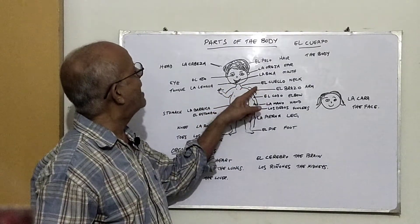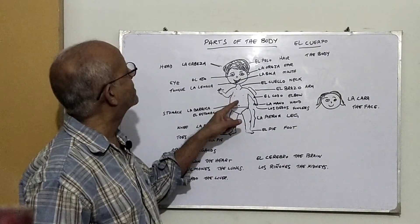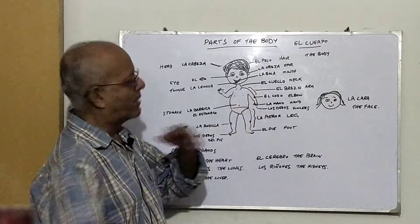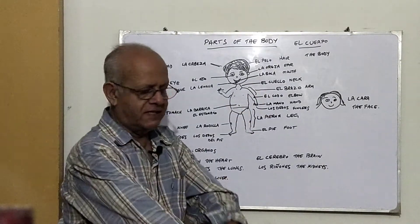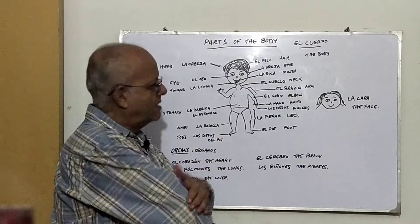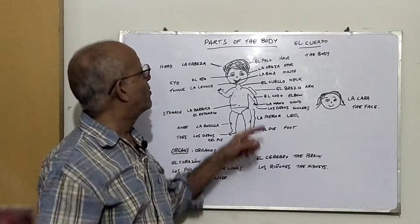The neck - el cuello. The arm, from here till here, it's called el brazo. The whole thing from here till here - el brazo. The elbow is called el codo.